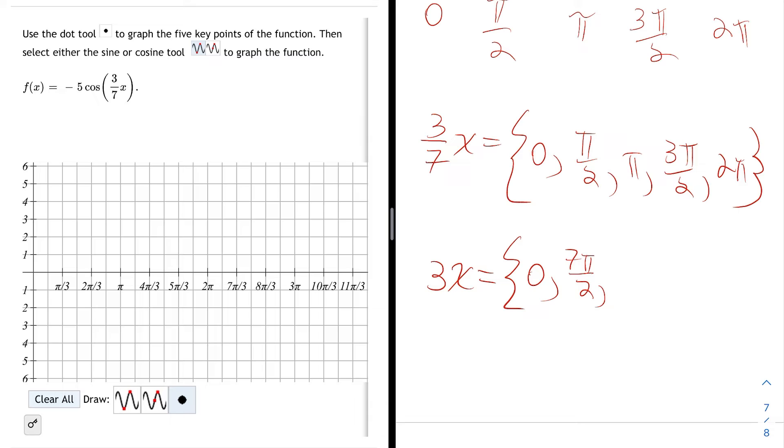Then 7 times π, which is 7π. Then 7 times 3π/2, which is 21π/2. And then 7 times 2π, which is 14π.